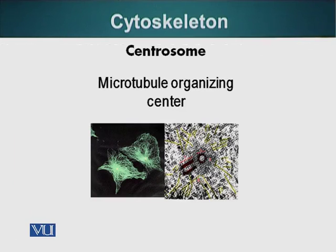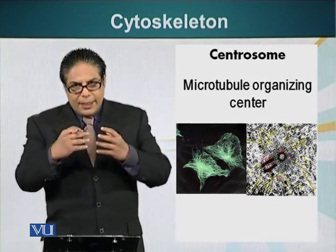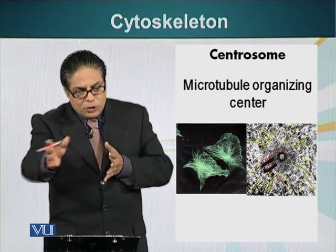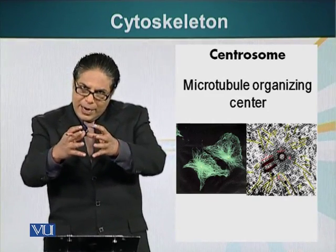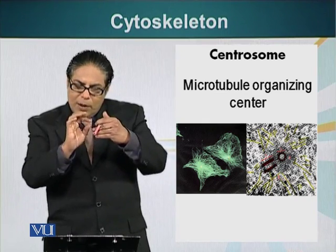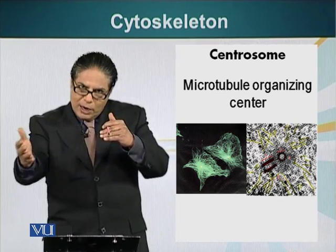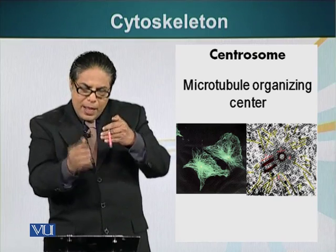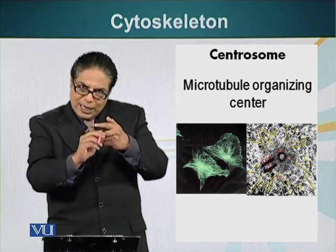The minus end of a microtubule is embedded in the centrosome. The centrosome has an amorphous mass around it, and within that amorphous mass there is another type of tubulin called gamma tubulin, which acts like a seed from which microtubules grow. This is how the cell maintains its orientation — there is a centrosome in the middle from which hundreds of thousands of microtubules emanate, each with the plus end toward the plasma membrane and the minus end embedded toward the cell center.